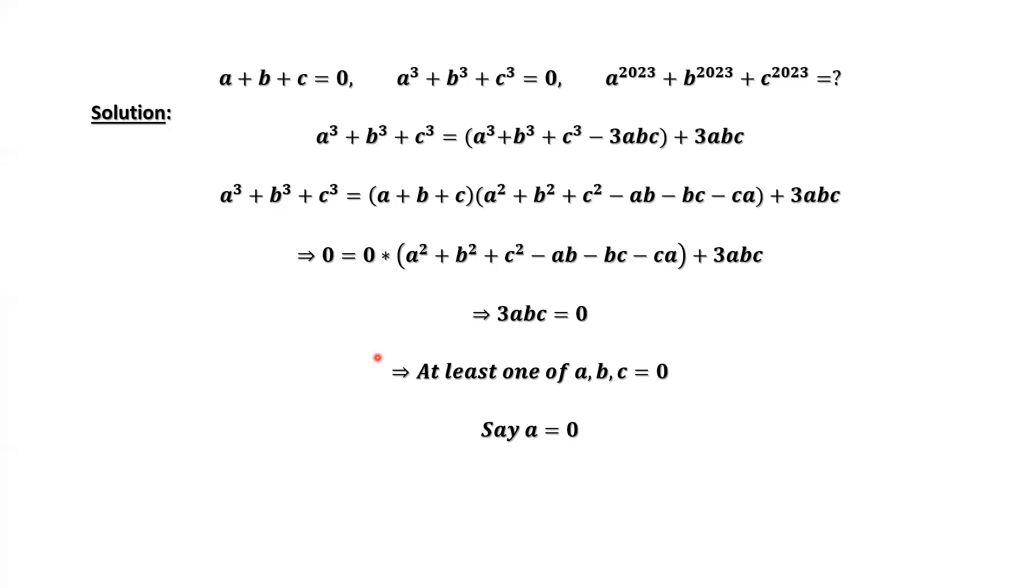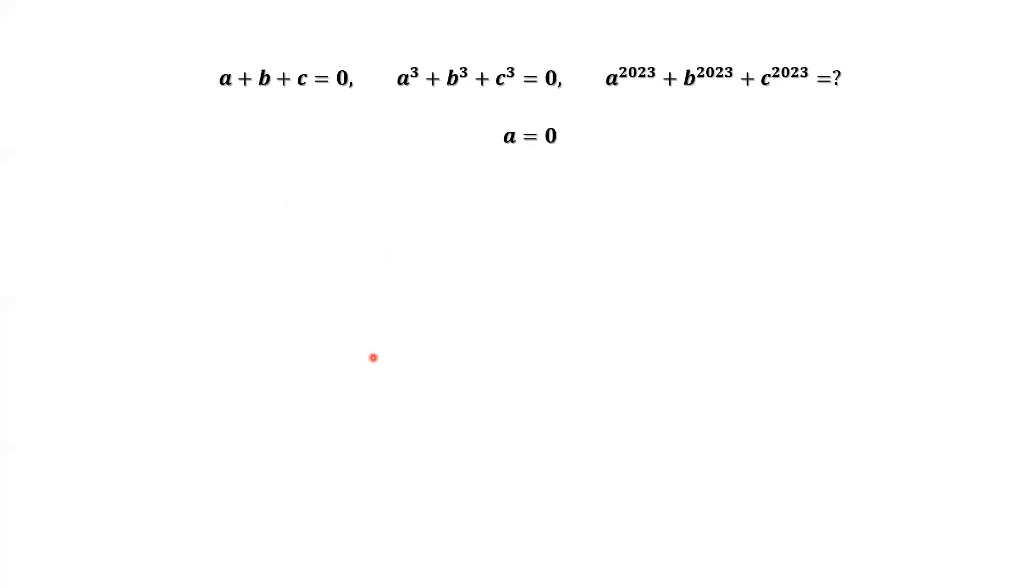Say A equals 0. If A equals 0, from the first given condition, we have the following result: B equals negative C.